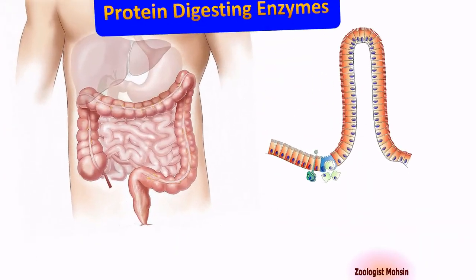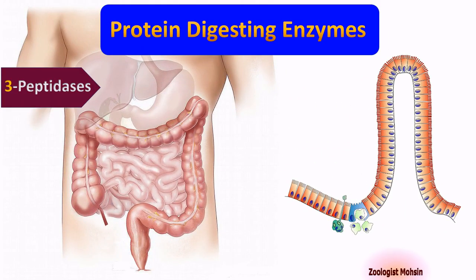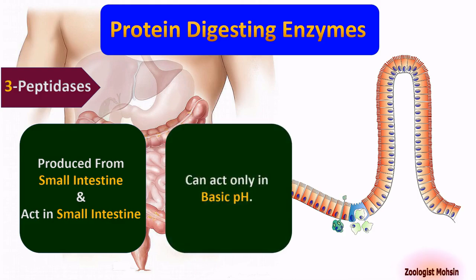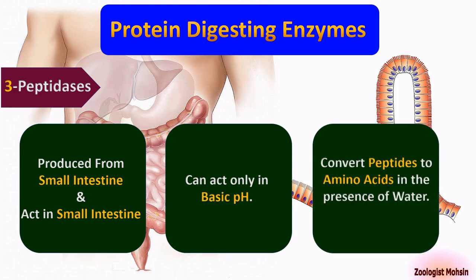Number three: peptidases. Peptidases are produced from the small intestinal wall and act in the small intestine as well. They can act only in basic pH, that is more than 7. Peptidases convert peptides to amino acids in the presence of water. Please note the difference — peptidases produce amino acids, unlike pepsin and trypsin.